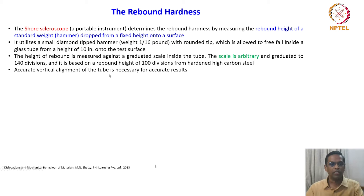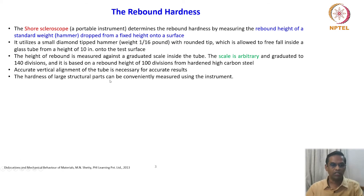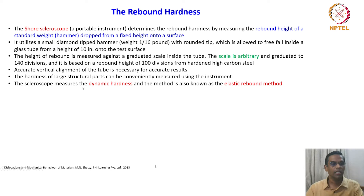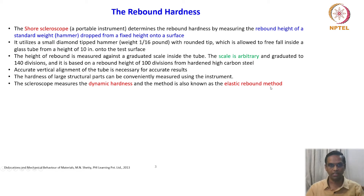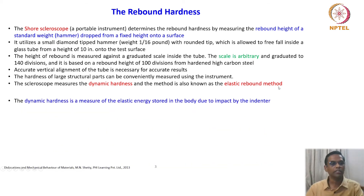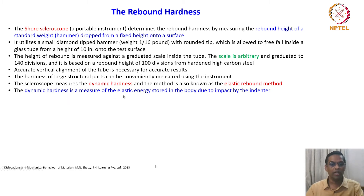The height of rebound is measured against a graduated scale inside the tube. The scale is arbitrary and graduated to 140 divisions, based on the rebound height of 100 divisions from hardened high carbon steel. It is a kind of relative rebound height that gives an idea about the hardness of the material and indirectly its strength. Accurate vertical alignment of the tube is necessary for accurate results. The hardness of large structural parts can be conveniently measured using this instrument. The Scleroscope measures the dynamic hardness, and the method is also known as the elastic rebound method.